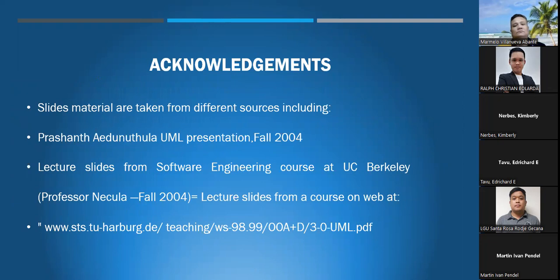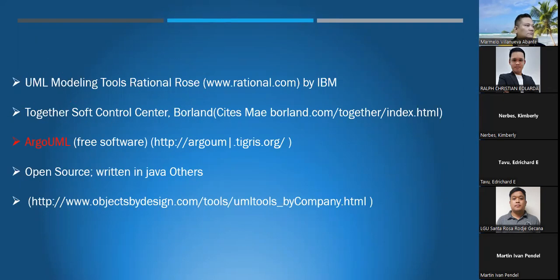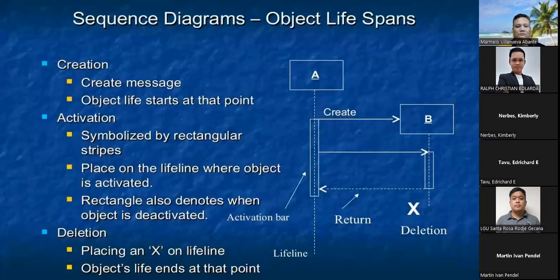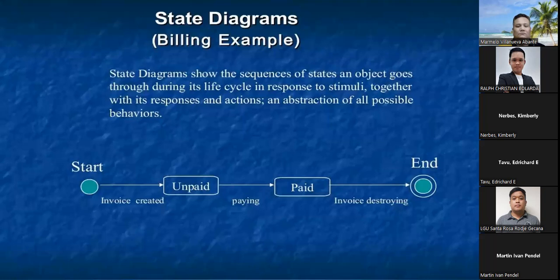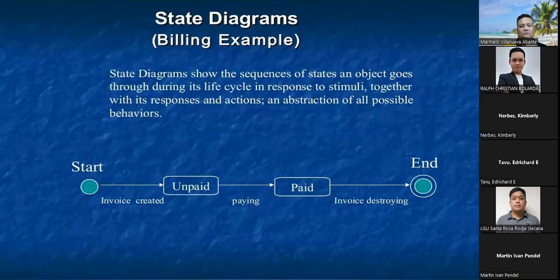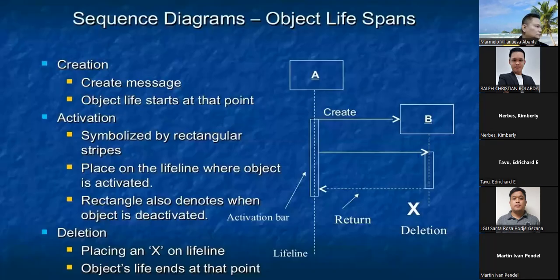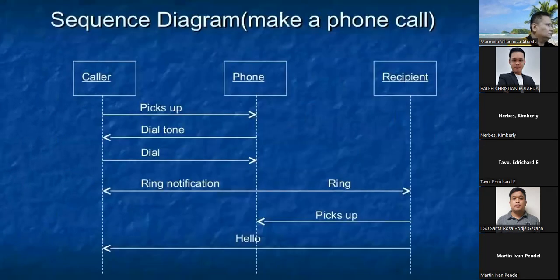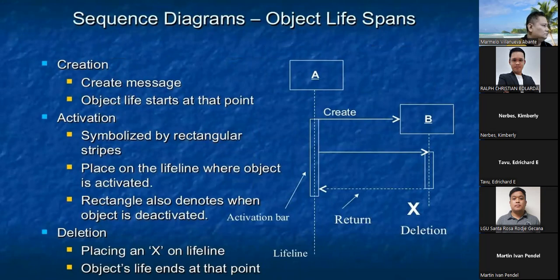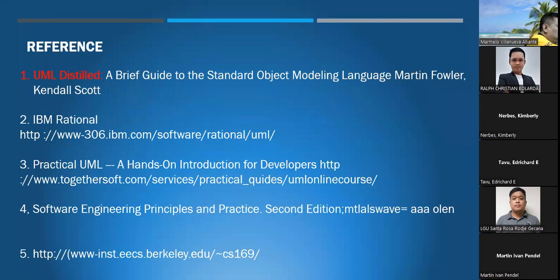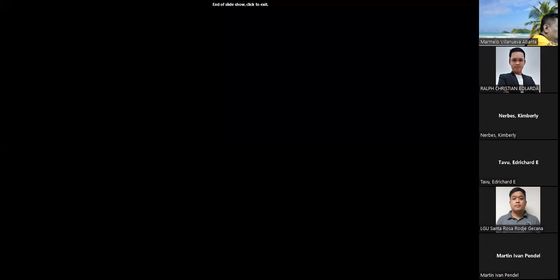The slide material was taken from different sources. My report is brief, but the overview and the aspects of UML gave us ideas on how and why we need to use UML. There are a lot of modeling diagrams that we can use — those are the structural diagrams, behavioral diagrams, and others. That's all of my report about the Unified Modeling Language. Thank you.